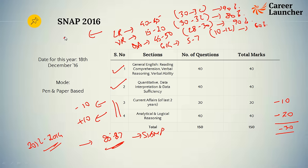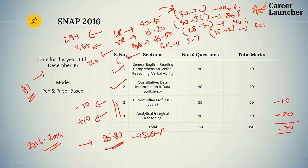Overall target scores: logical reasoning — 29 plus; verbal — 26 plus; quant — 26 plus; GK — about 6. Adding those up: 29 + 26 + 26 + 6 = roughly 87. So even in a worst-case scenario with limited attempts, you're looking at a score of roughly 87. By using the first 5 to 7 minutes to judge the paper overall — not worrying about nitty-gritties — you still have a very good opportunity to clear the cutoff. All the very best for SNAP 2016, and feel free to reach out if you have any questions. Thank you very much.